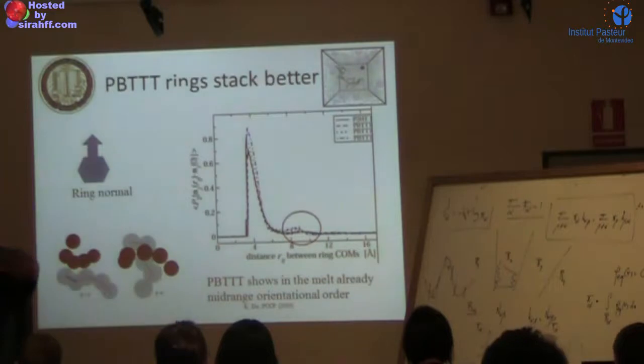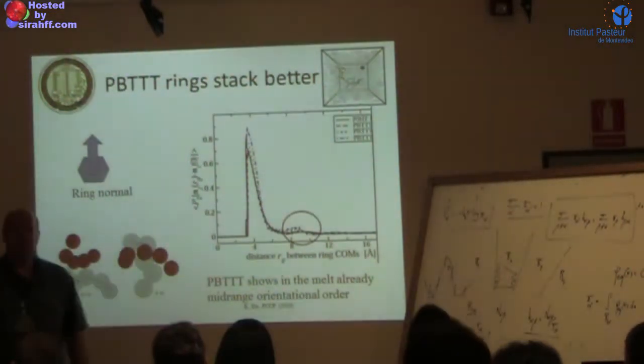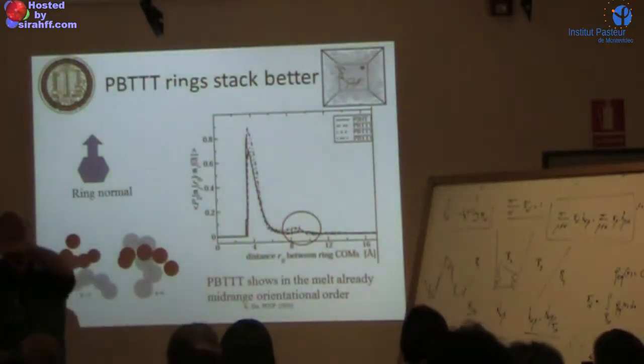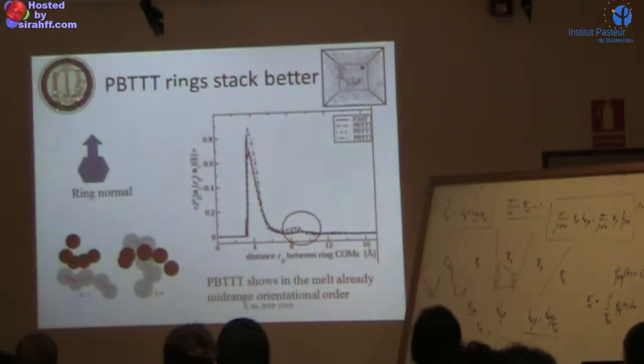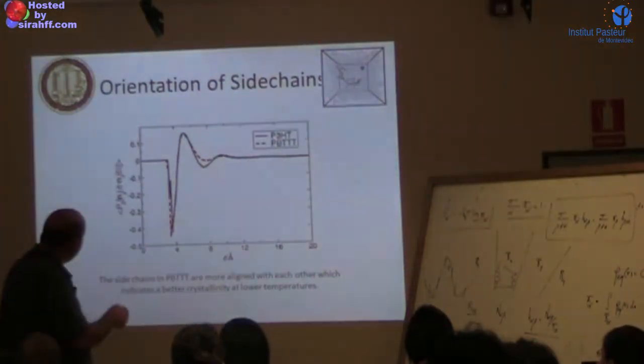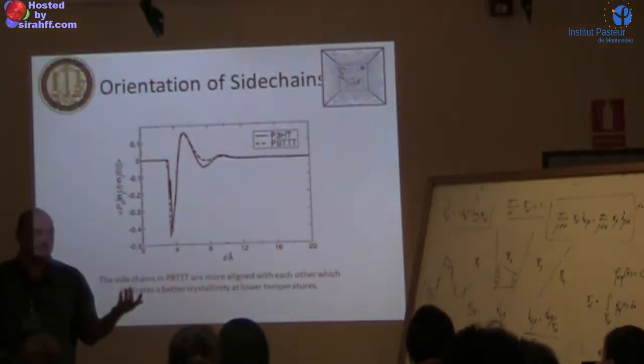At lower temperature we'd get significant long-range stacking, but in the melt we just get nearest neighbor stacking. What we don't see, unlike in polyethylene or polystyrene, is P2 starting negative. Normally two chains arrange perpendicular at closest approach. We don't get this configuration because the chains are locally too stiff to wrap around each other. For side chain orientation we see the negative-positive-negative pattern because side chains are more flexible, essentially alkane chains.